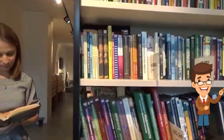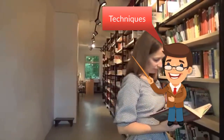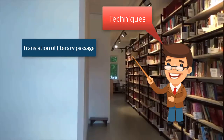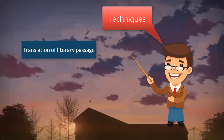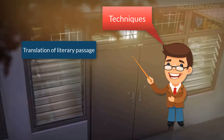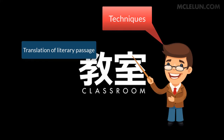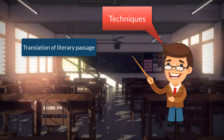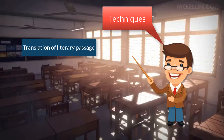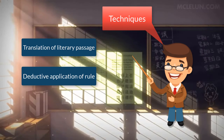The Grammar Translation Method has some techniques to be applied. For example, the first one is the translation of a literary passage — with this technique the student will have to translate a paragraph or a sentence from the target language into the native language.